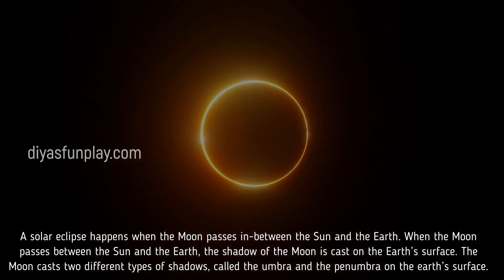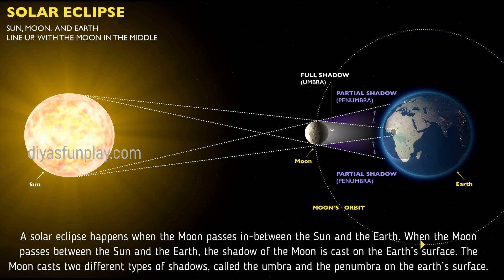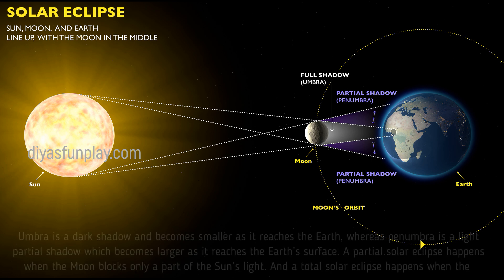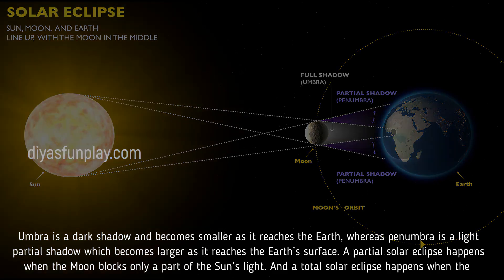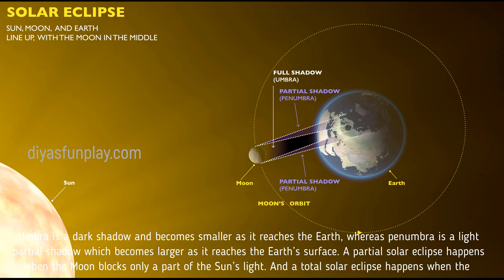The moon casts two different types of shadows called the Umbra and the Penumbra on the Earth's surface. Umbra is a dark shadow and becomes smaller as it reaches the Earth, whereas Penumbra is a light partial shadow which becomes larger as it reaches the Earth's surface.